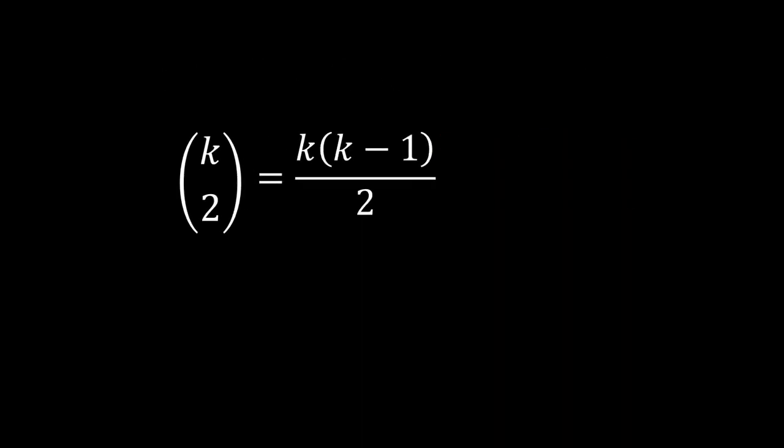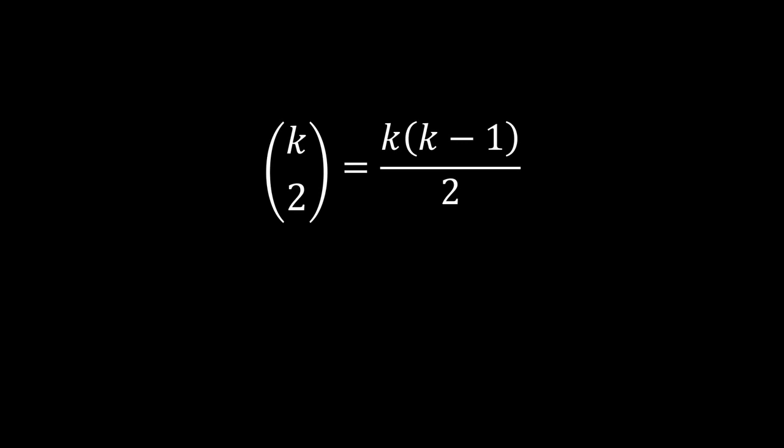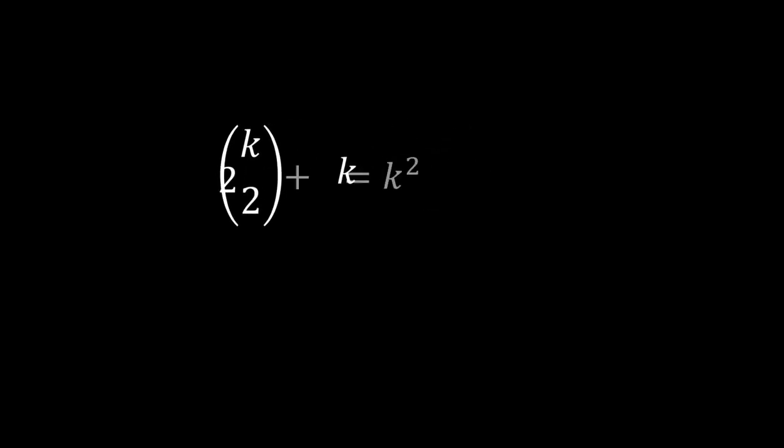Now simplify things a bit and expand, and we see the term k squared. To express an actual number squared as a combination, we can make k squared the subject.